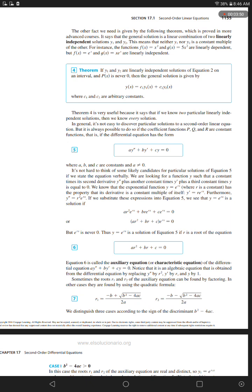But e to the power rx is never 0. Thus, y equals e to the power rx is a solution of equation 5 if r is a root of the equation, equation 6: A times r squared plus B times r plus C equals 0.